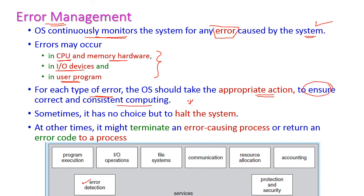Sometimes the operating system has no choice but to halt the system if it cannot handle the error. In other cases, it might terminate only the affected process, or return an error message to the process. This is error management.